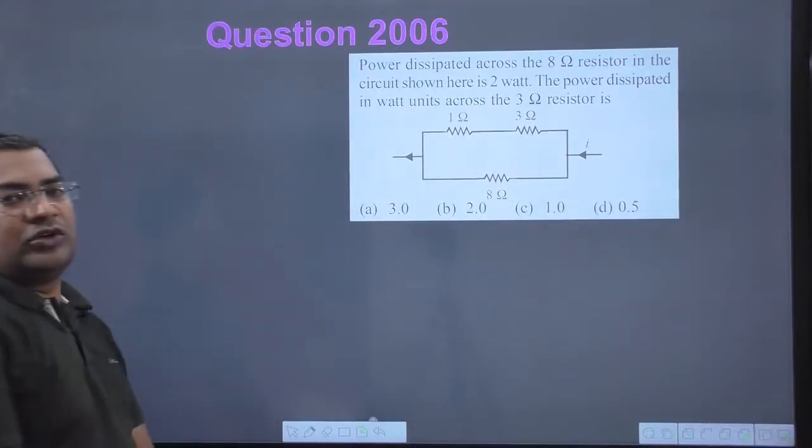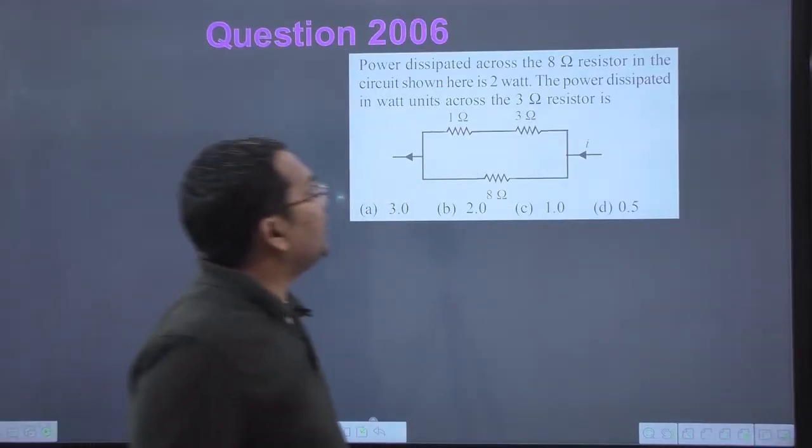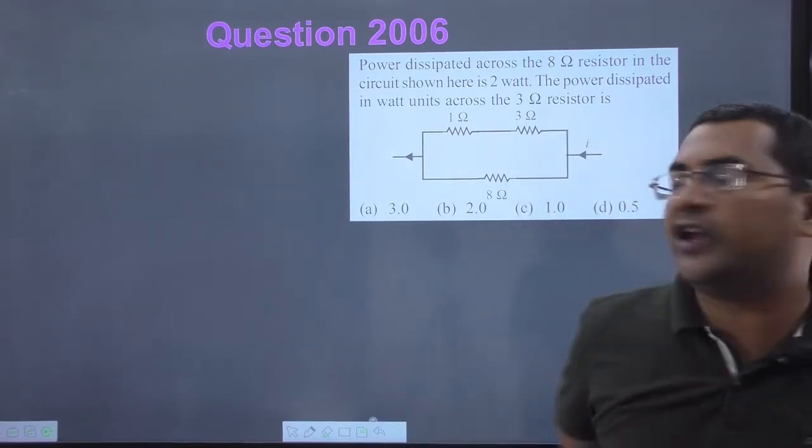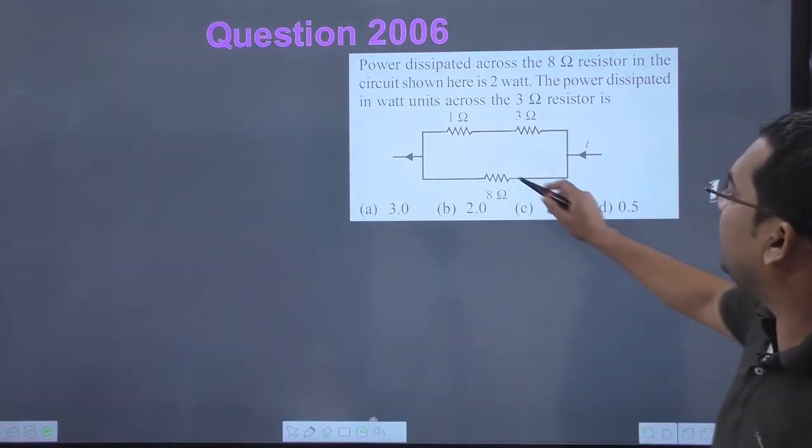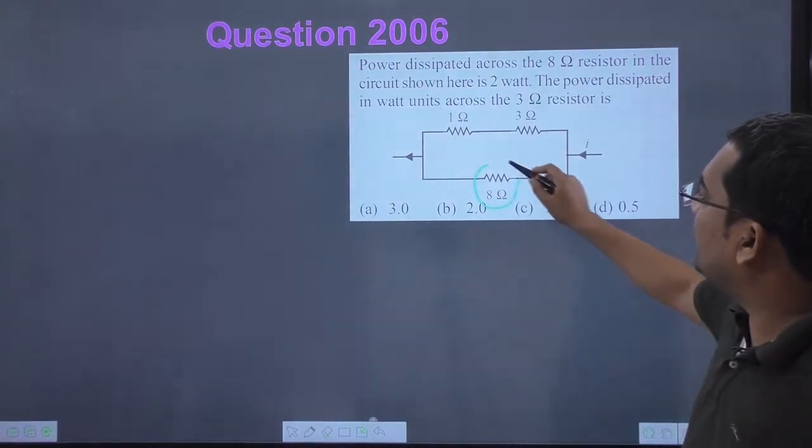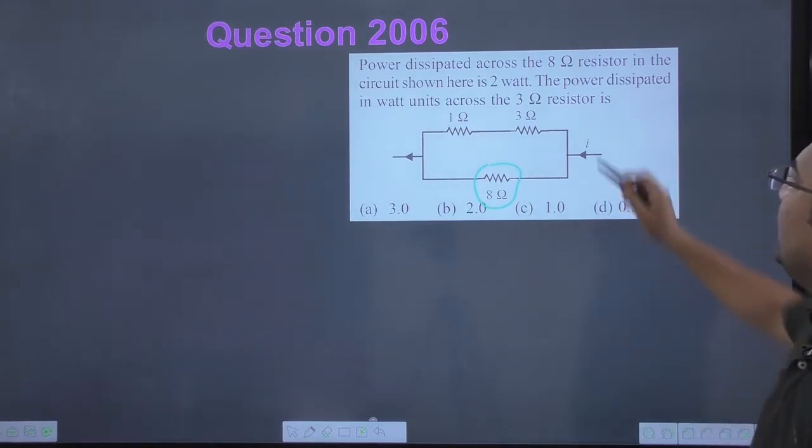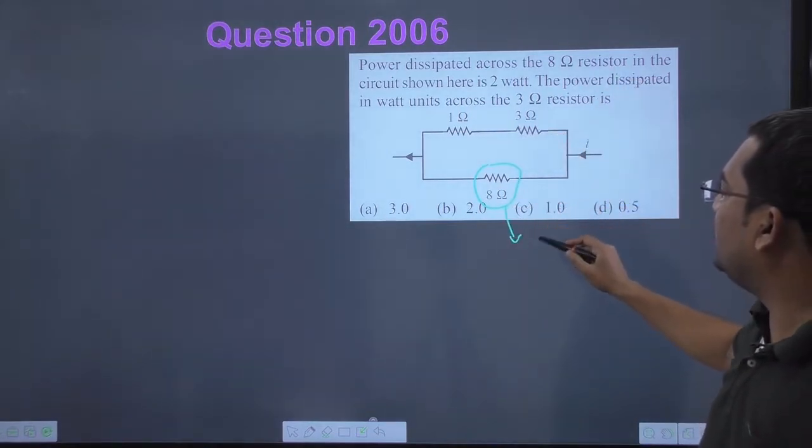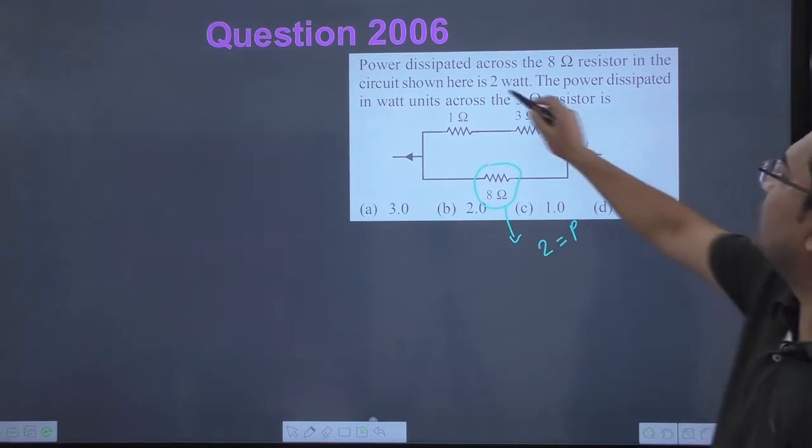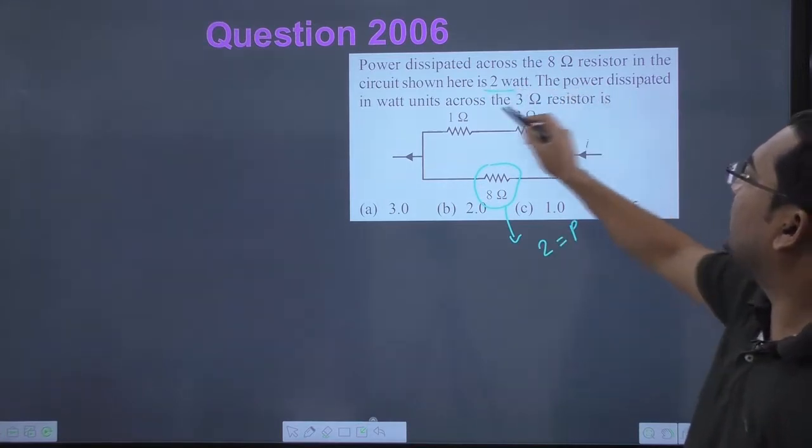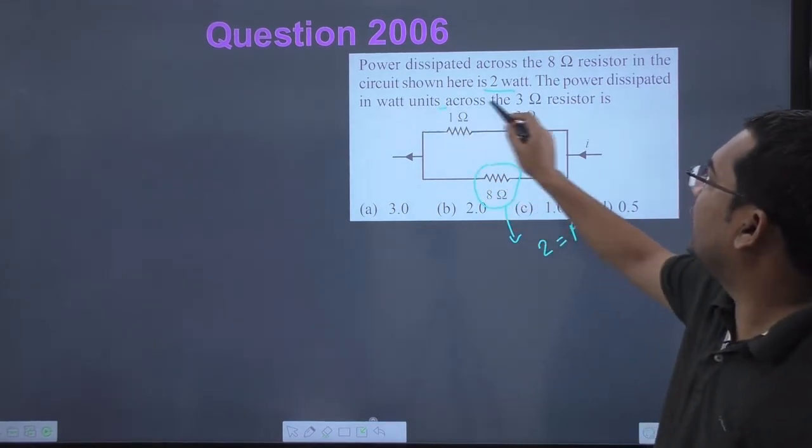Let's look at the next question. The power dissipated across the 8 ohm resistor in this circuit is 2 watts. That is, power P equals 2 watts. Now we need to find the power dissipated in watts across the 3 ohm resistor.